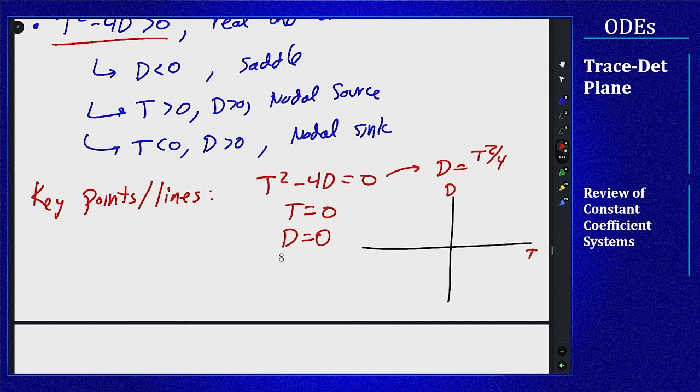So that's how we use this idea of the trace-determinant plane to help us analyze what's going to happen to one of these constant coefficient systems. Even if we don't want to do all the nasty work to write the general solution out, we can still use just the info at hand here with just knowing T and D to figure out what's going to happen to that system. A lot of times all you really need is the general idea of the behavior, and you can use this info and this plane idea to get to it.